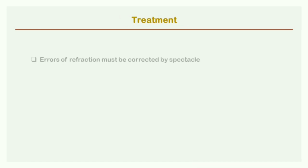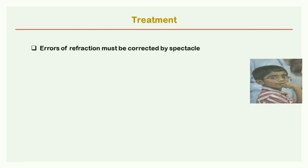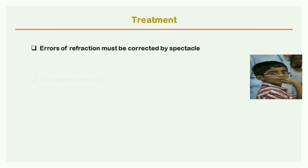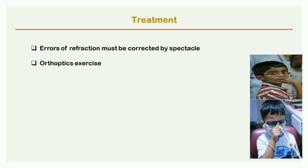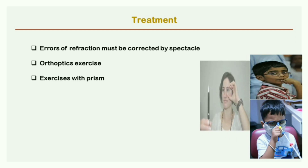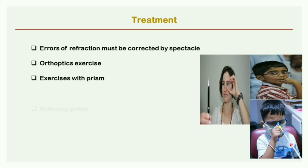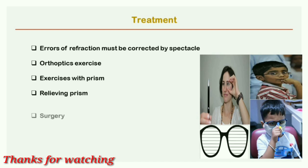The treatment of strabismus: first, refractive error must be corrected by spectacles. Second is orthoptic exercises, using therapy systems such as the VPS system, Brock string aperture rule to increase fusional range and muscle power. Third is exercise with prisms placed with the base turned toward the direction of deviation. Fourth is relieving prisms incorporated into spectacles to correct the defective alignment. The last treatment option is surgery, which is a permanent solution.